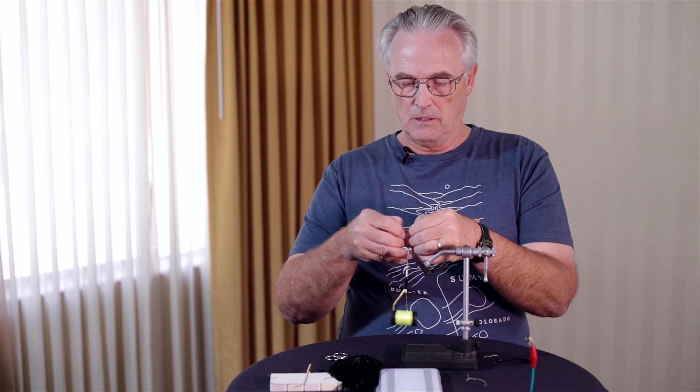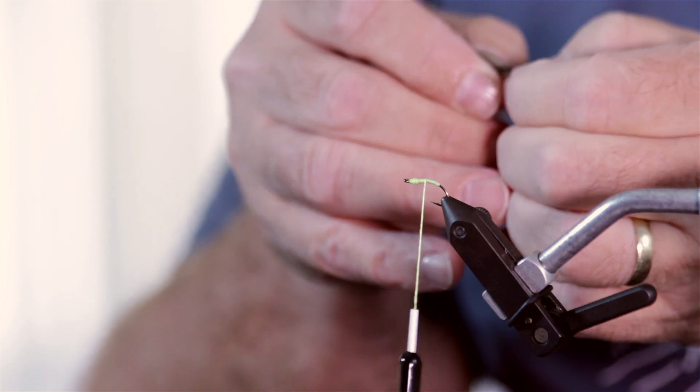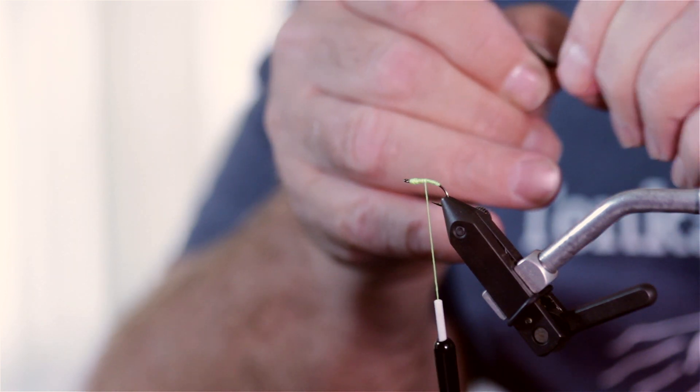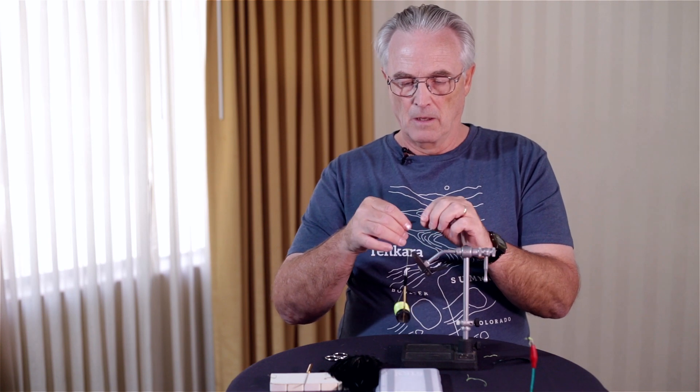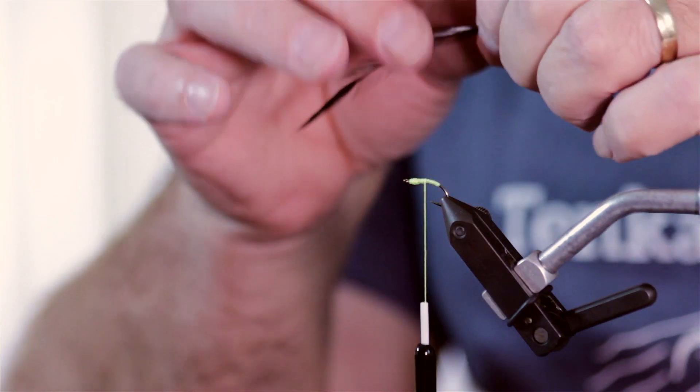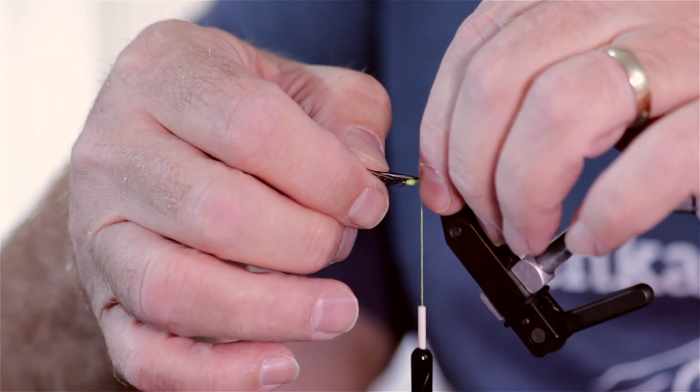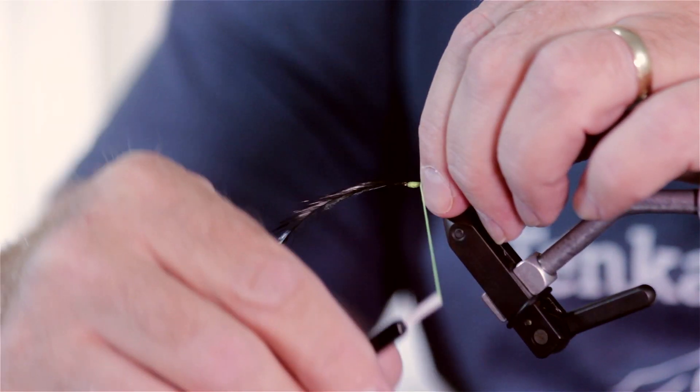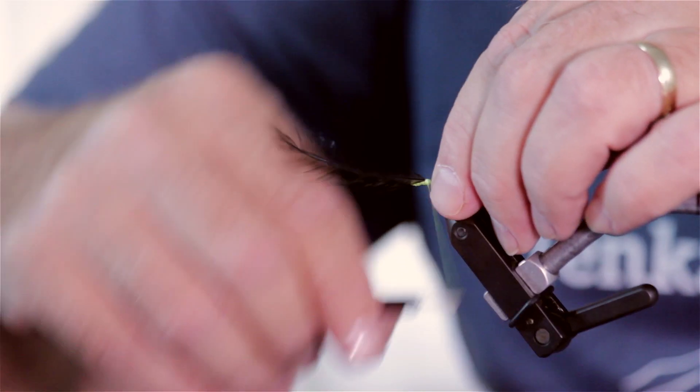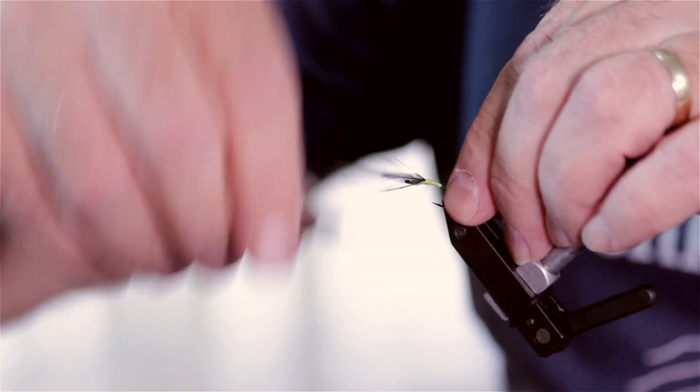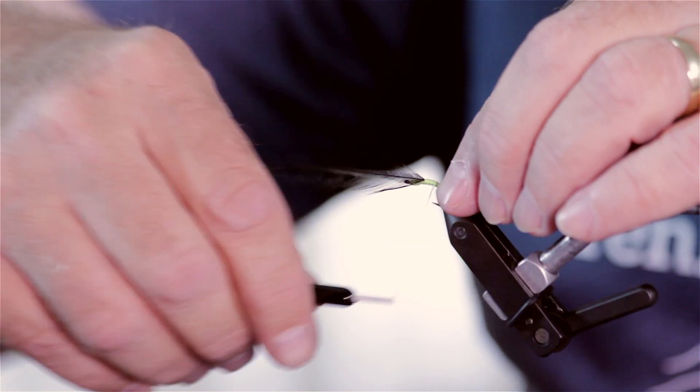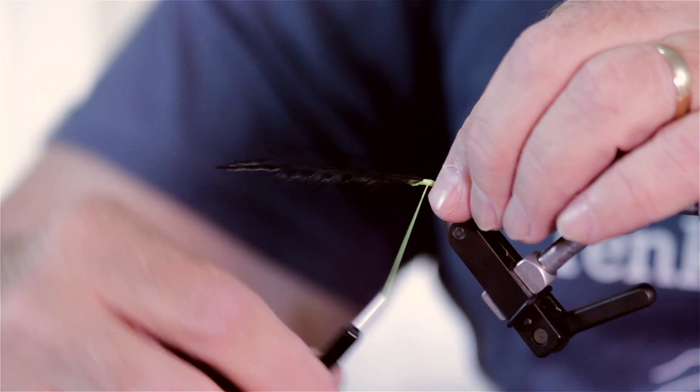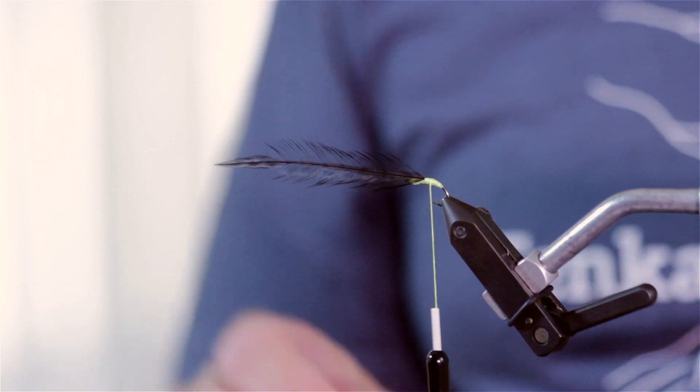Tear off just a little bit of the barbs at the end to give your thread something to bite into. Lay it so it cups down. And then tie that in. Again, take it all the way back down to where I started, come back up, and stop just a little ways behind the hackle.